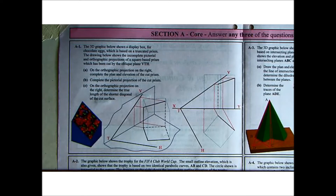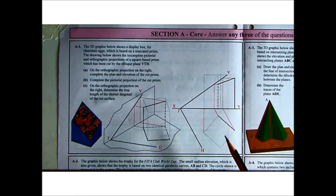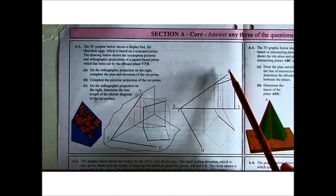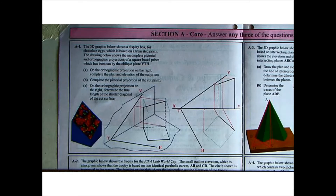Question A1: the 3D graphic below shows a display box for chocolate eggs, which is based on a truncated prism. The drawing below shows the incomplete pictorial and orthographic projections of the square-based prism, which has been cut by the oblique plane VTH. We have the 3D view here, and then the 2D orthographic view on the right, with the plane VTH cutting the prism. Part A: on the orthographic projection on the right, complete the plan and elevation of the cut prism. Part B: complete the pictorial projection of the cut prism. Part C: on the orthographic projection on the right, determine the true length of the shorter diagonal of the cut surface.